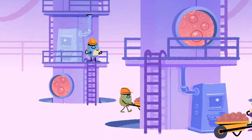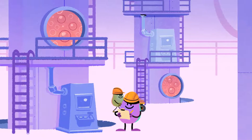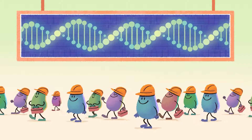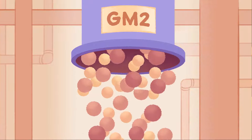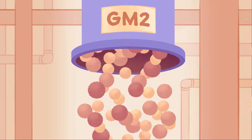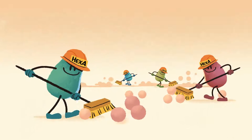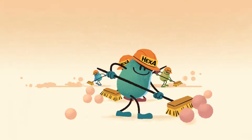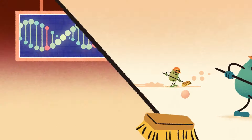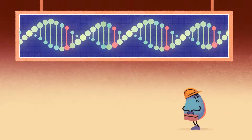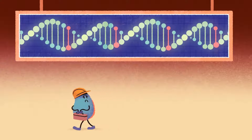In someone not affected by Tay-Sachs or Sandhoff, the cells of the brain work like a factory. The genes instruct how many workers there need to be and what their jobs are. When the factory is working efficiently, it produces a molecule called GM2 which helps the brain work efficiently. Once GM2 has done its job, it is sorted and removed by a group of factory workers called Hex-A. However, in people with Tay-Sachs or Sandhoff disease, the mutated genes mean there aren't enough Hex-A workers.